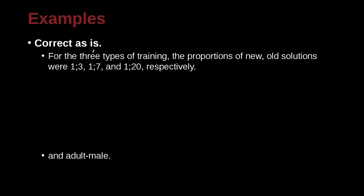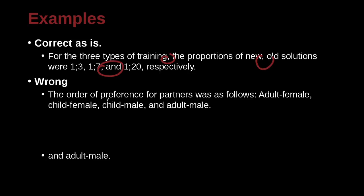For the three types of training, the proportions of new to old solutions were 1 to 3, 1 to 7, and 1 to 20, respectively. Here we have the comma, comma, comma — it's a very easy list.